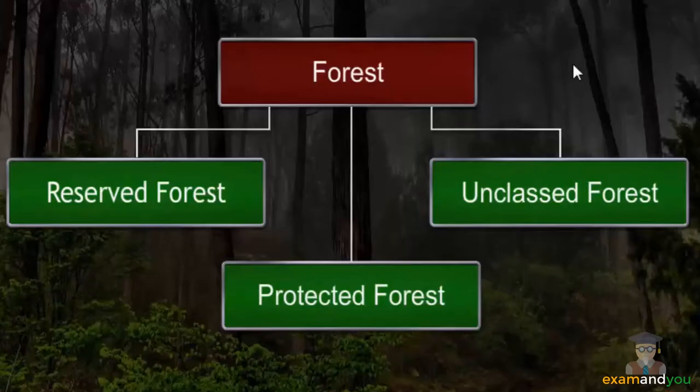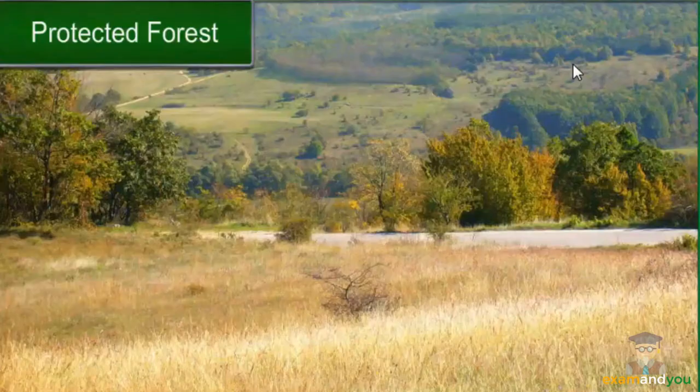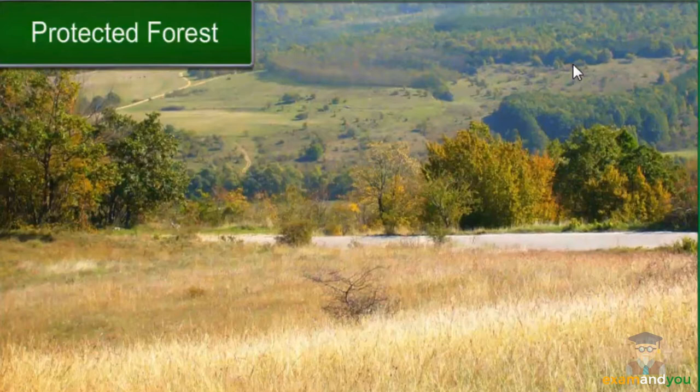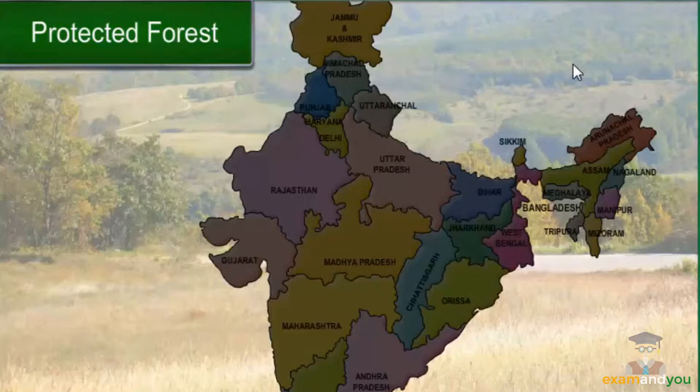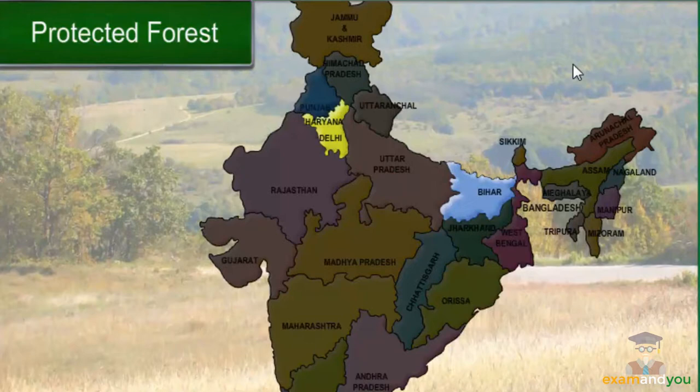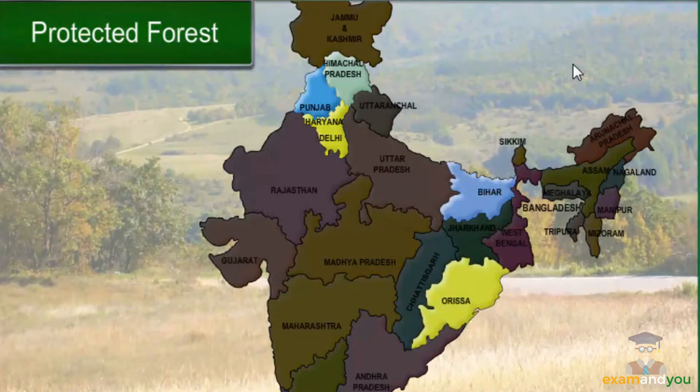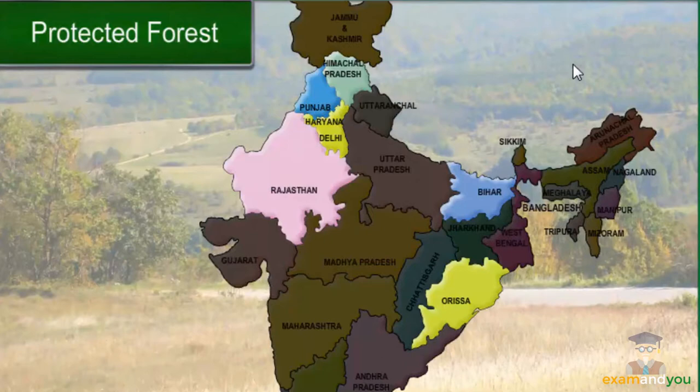Around one-third of the forests in India are classified as protected forests. These forests are guarded against further loss of forest and wildlife resources. Most parts of the forests in Bihar, Haryana, Punjab, Himachal Pradesh, Orissa, and Rajasthan are classified as protected forests.